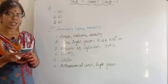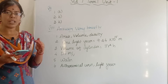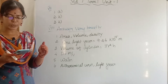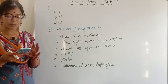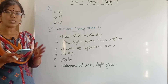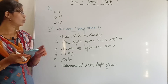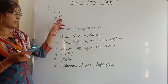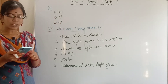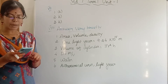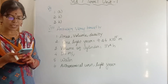Second assertion-reason question: the assertion is that wood floats in water. Water is a transparent liquid — that is the reason. Both assertion and reason are true, but the reason is not the correct explanation of the assertion. Option B.